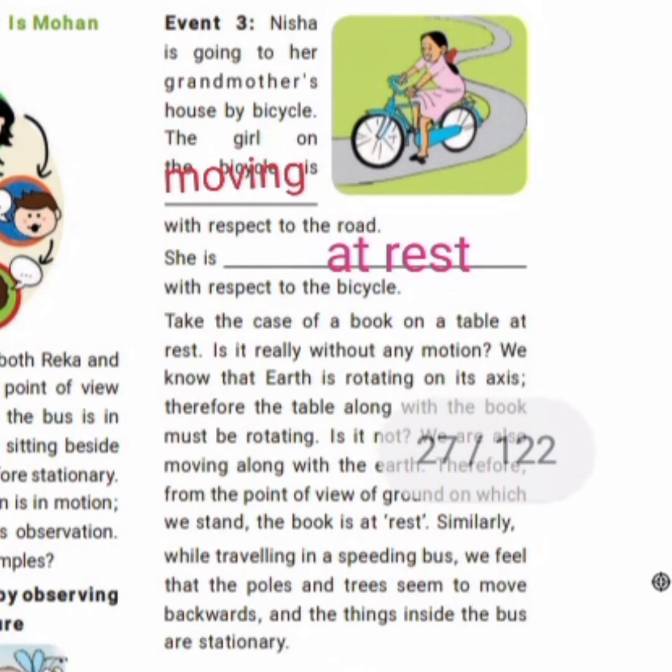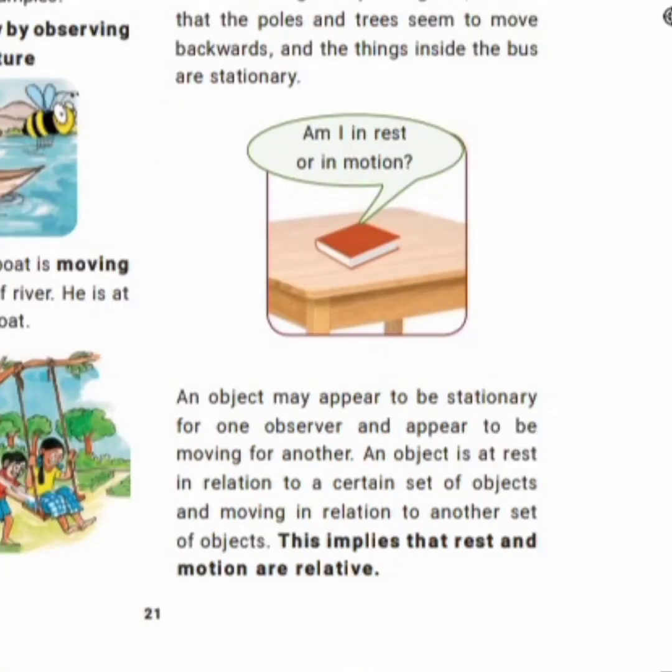When there is a change of position of an object with respect to time, it is called motion. While traveling in a speeding bus, we feel that the poles and trees seem to move backward, and the things inside the bus are stationary. If we sit by the window side, the trees and poles appear to be moving.